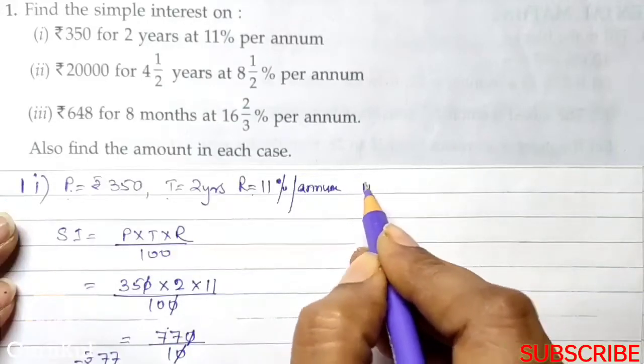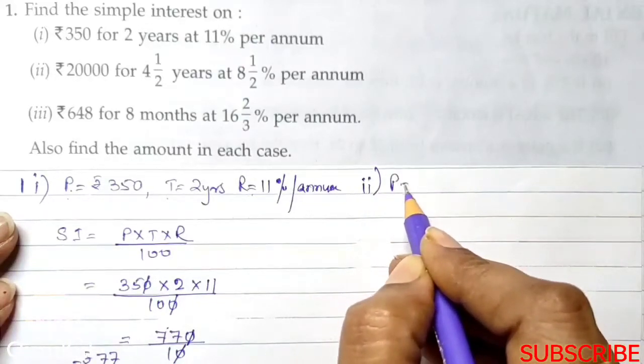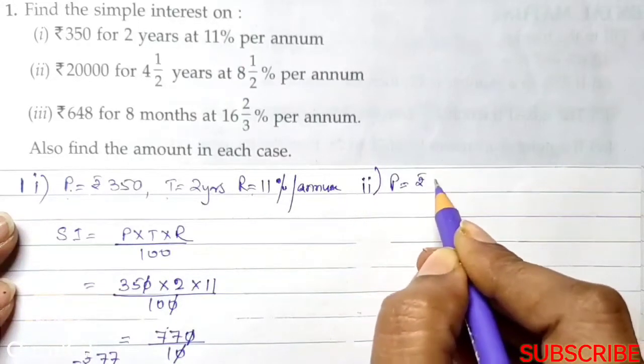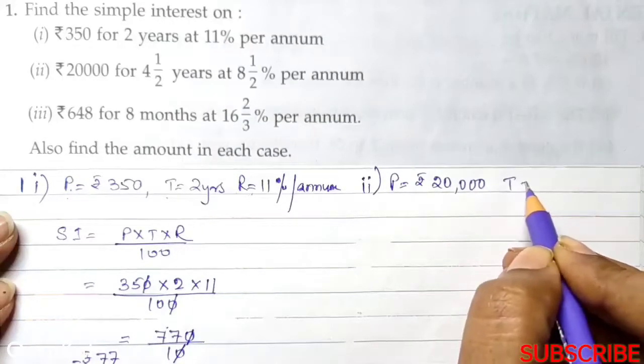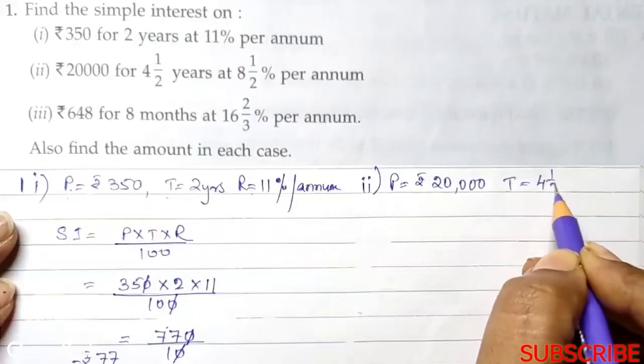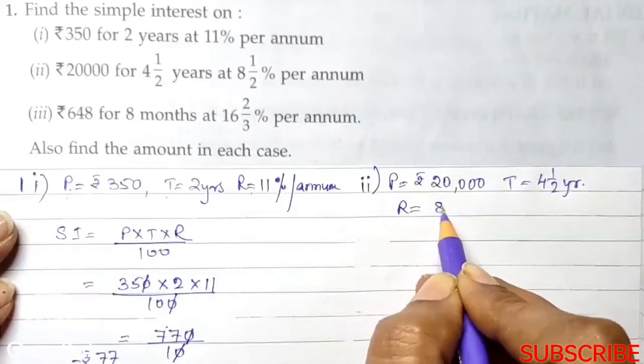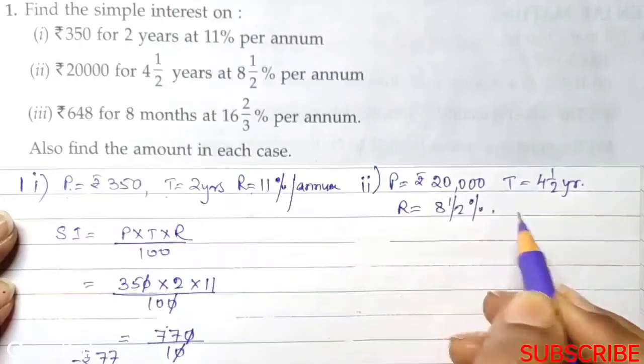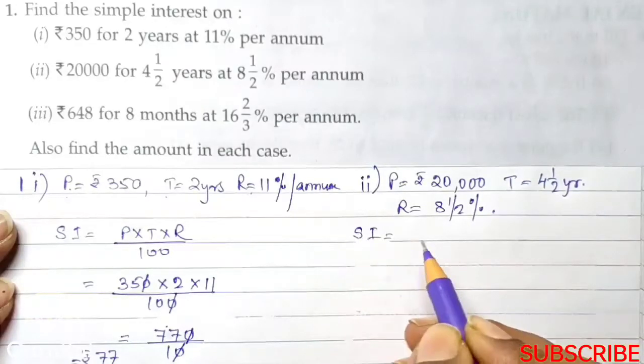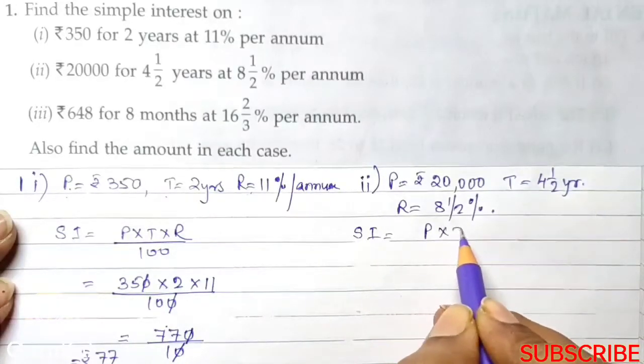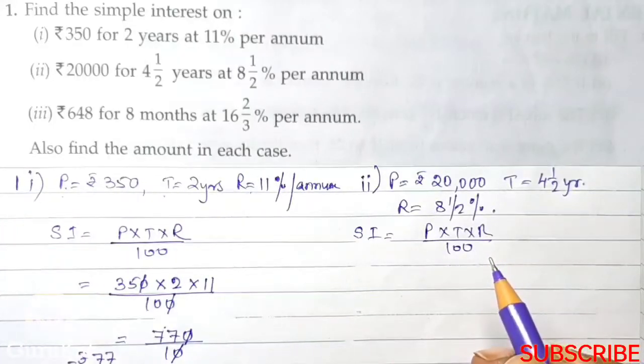Now, the second part of this question is, principle is rupees 20,000, time is 4.5 years and rate is 8.5 percent. So, first we have to find out its interest, which is P into T into R by 100.